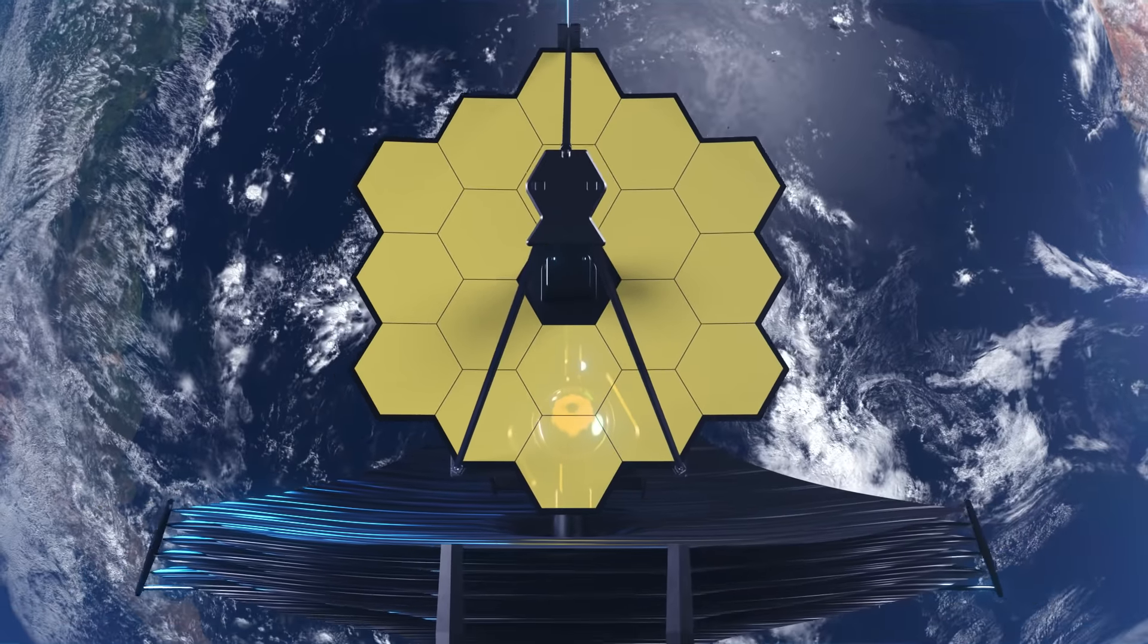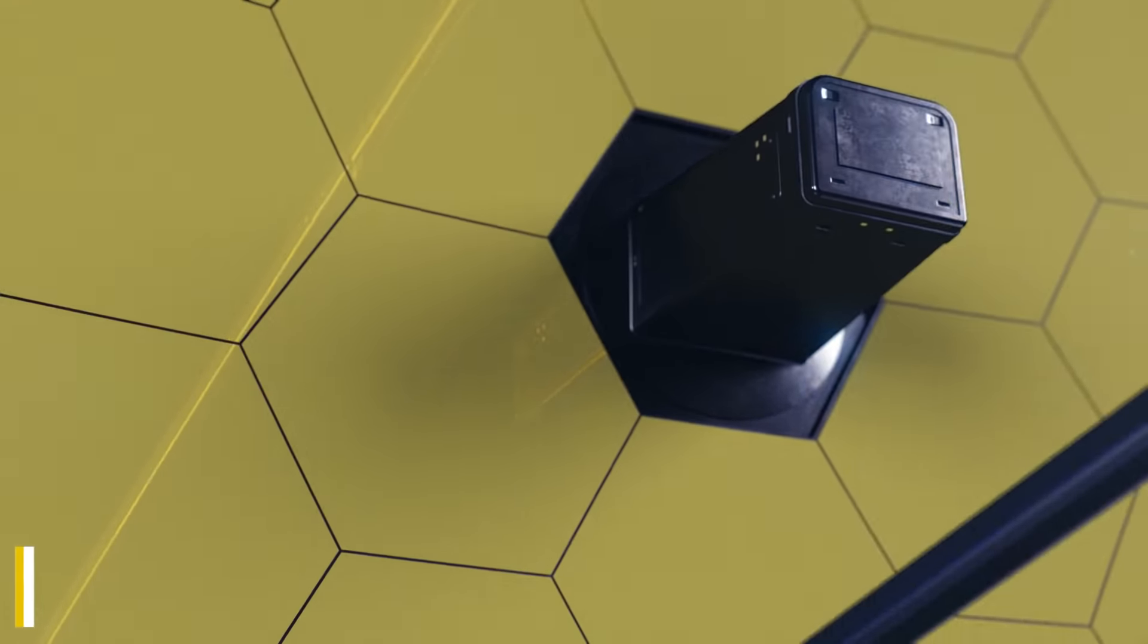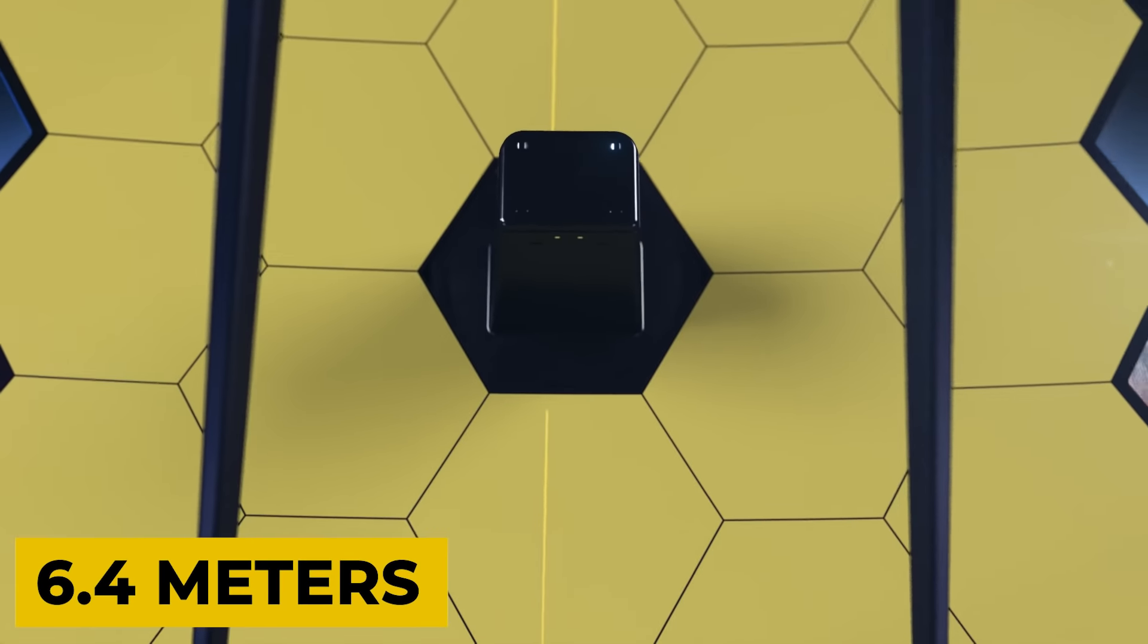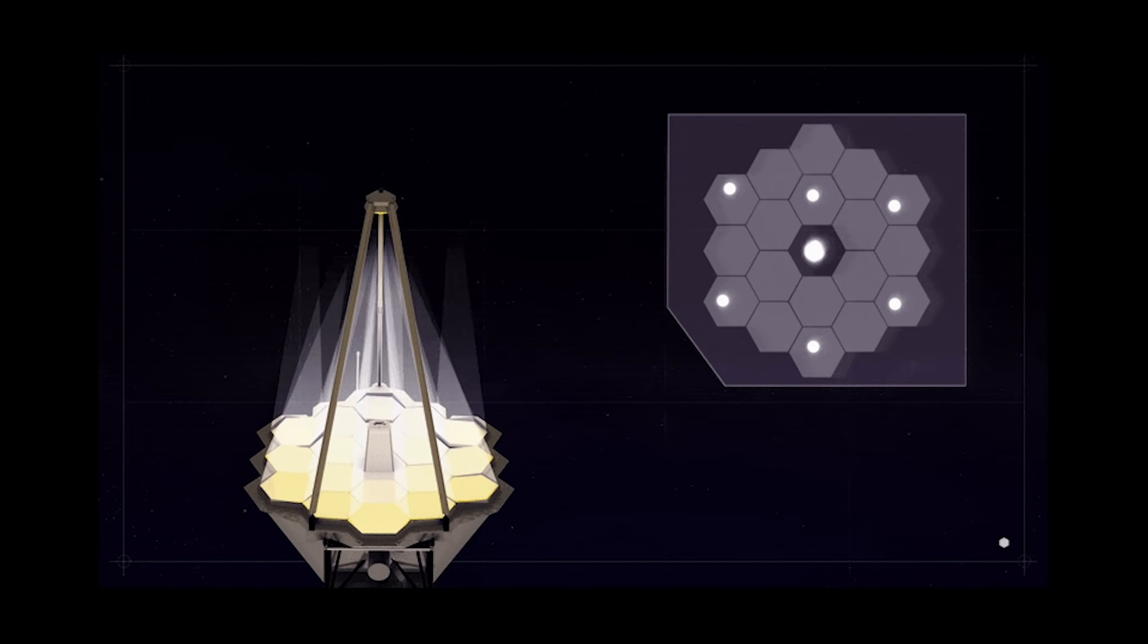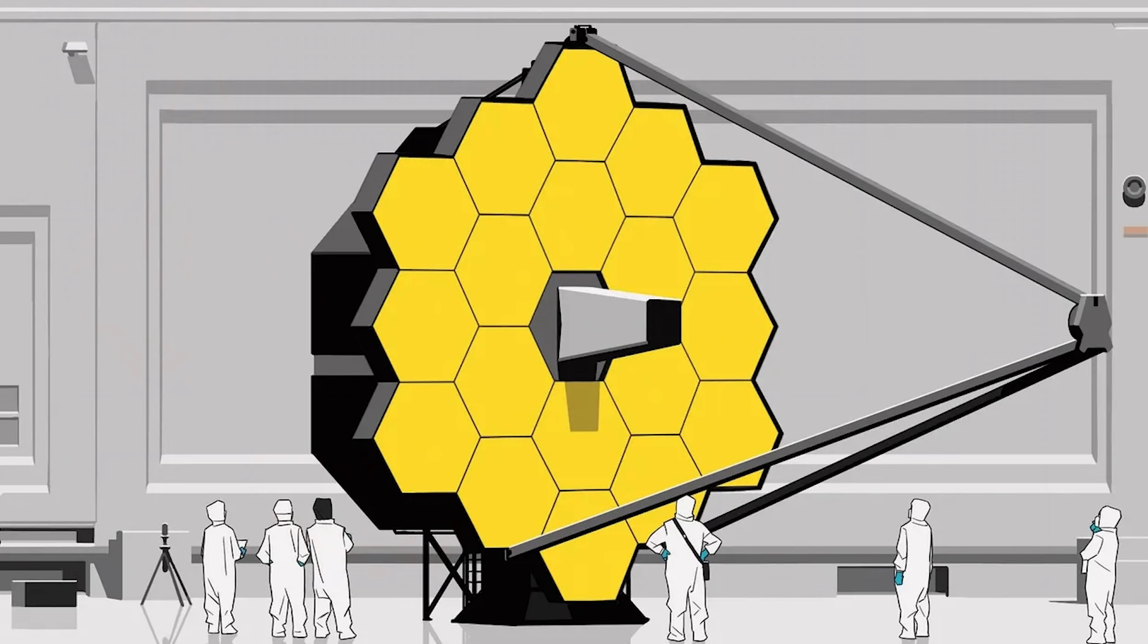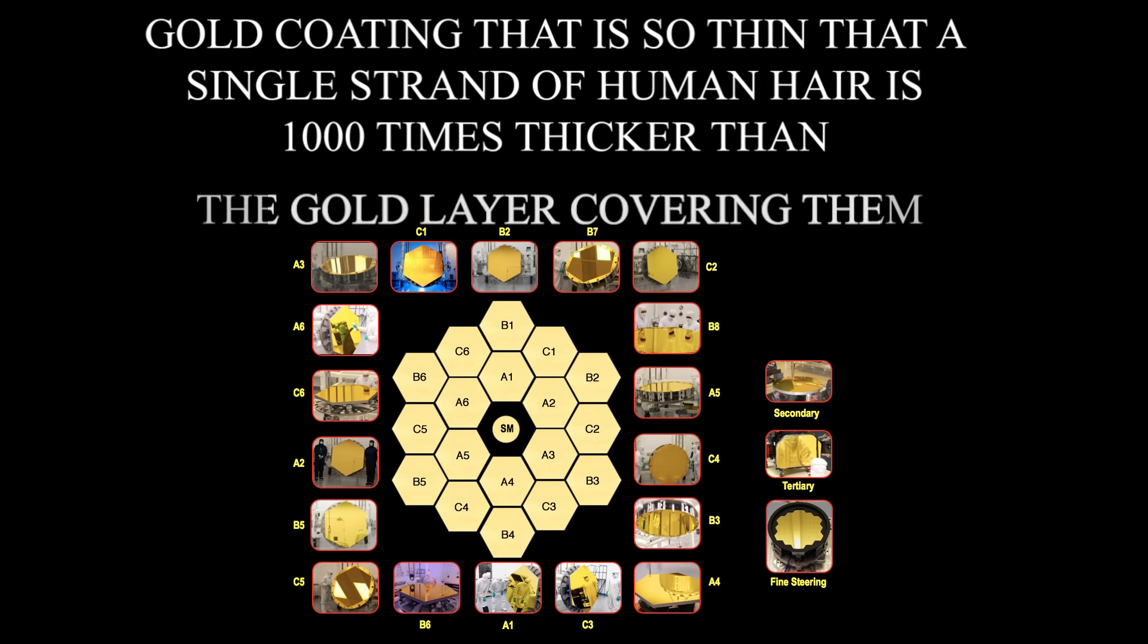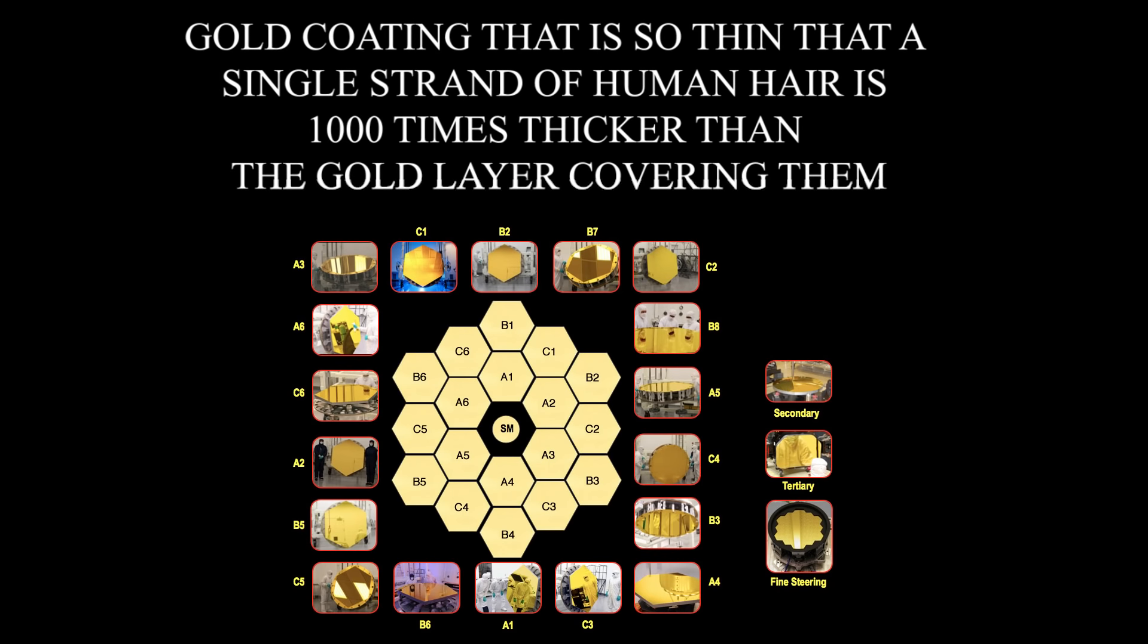A large part of it is the massive primary mirror, measuring 6.4 meters in diameter. It comprises 18 smaller segments that must all be perfectly aligned. They are covered in a gold coating that is so thin that a single strand of hair is 1,000 times thicker than the gold layer covering them.